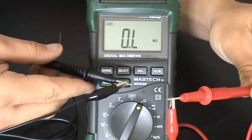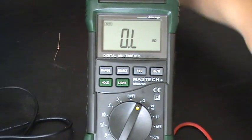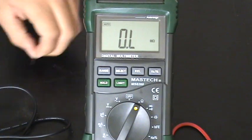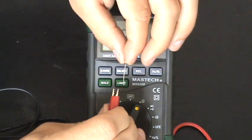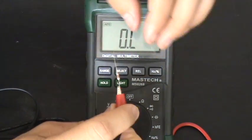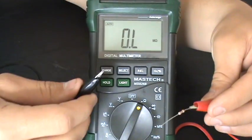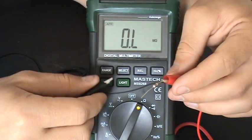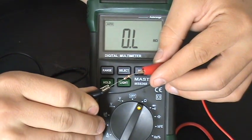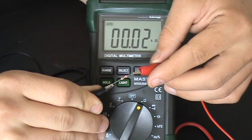take the other end of the alligator clip - it doesn't really matter what end you choose - and clip one end onto the resistor. Then take the other alligator clip and clip it onto the other end of the resistor, and you should get a reading.